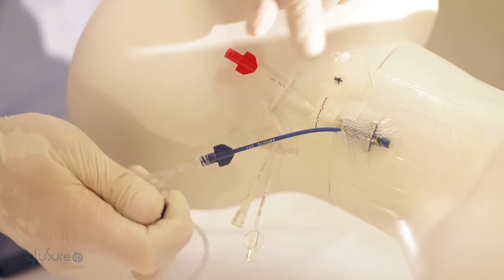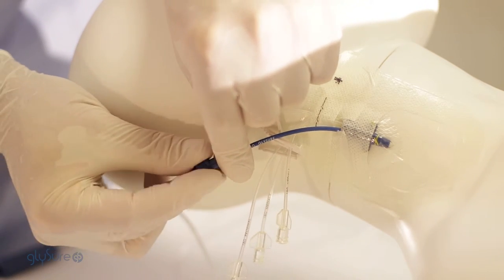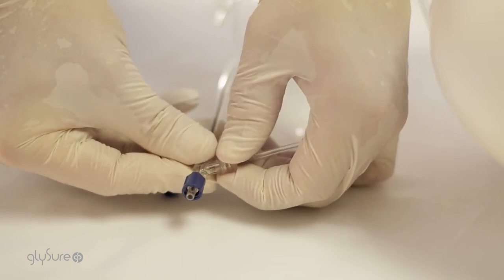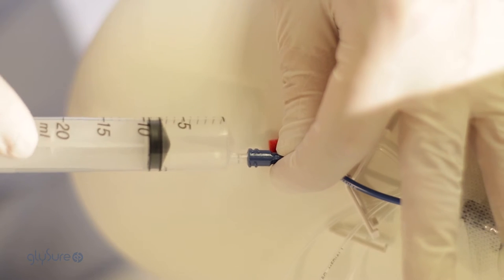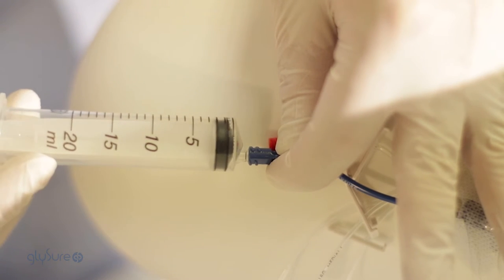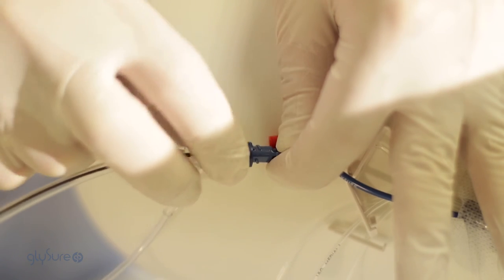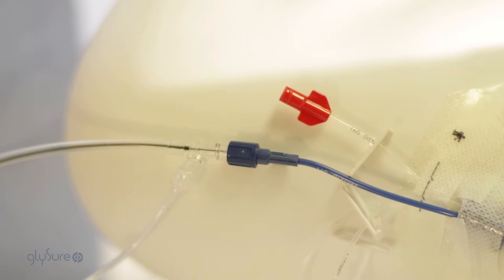Remove the saline infusion line from the blue sensor lumen and cap the lumen. Attach the saline infusion line to the sensor Y-site and purge the air. Flush the blue sensor lumen with a 5-10 milliliter bolus of saline. Connect the sensor to the blue sensor lumen and establish a fast flush. Approximately 2-5 millilitres per minute for 30-60 seconds.